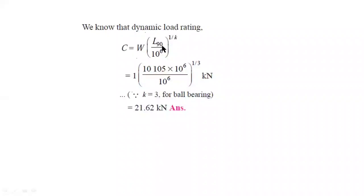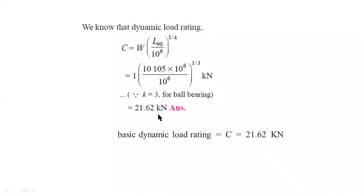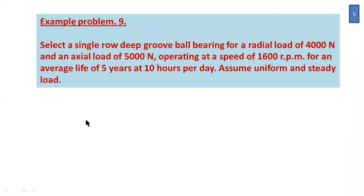Substituting L90 = 10,105 × 10⁶ divided by 10⁶, raised to the power of 1/3 (k=3), the final answer for the basic dynamic load rating is C equals 21.62 kilonewtons. The answer is in kilonewtons because the equivalent dynamic load W was given in kilonewtons. This completes the first problem.